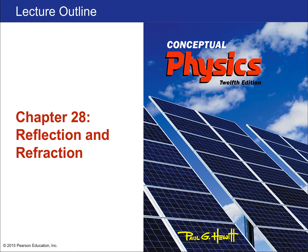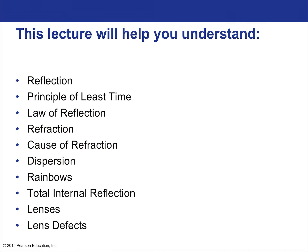Welcome to the lecture on Chapter 28. We're going to continue talking about light, this time covering ray optics — specifically reflection and refraction. This treats light as traveling along straight paths and considers what it does geometrically. Topics include reflection, the principle of least time, the law of reflection, refraction, causes of refraction, dispersion, rainbows, total internal reflection, lenses, and lens defects.